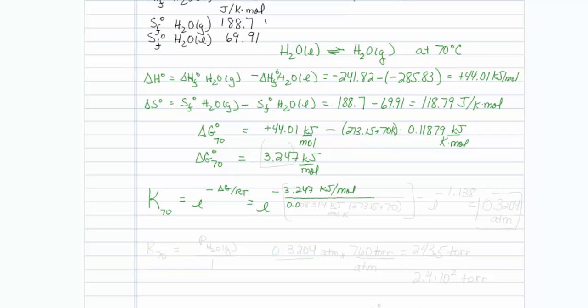So that will be equal to e to a minus 3.247 kilojoules per mole, and this will be divided by 0.008314 kilojoules per mole Kelvin times 273.15 plus 70 as my temperature. So when I put this all into my calculator, I have to get e to the minus 1.138, which turns out to be equal to 0.3204.